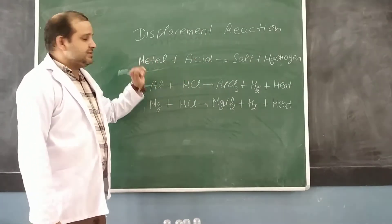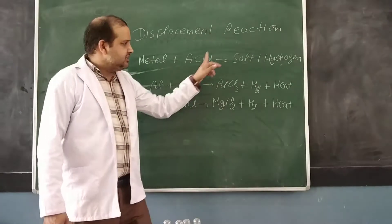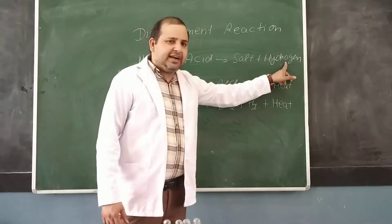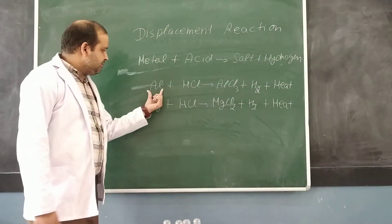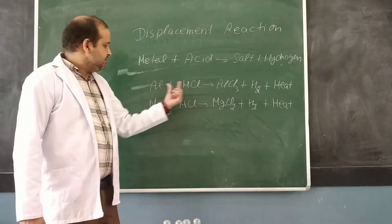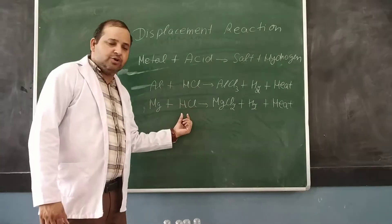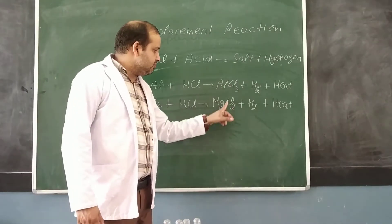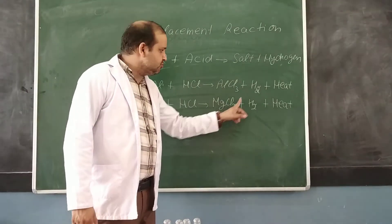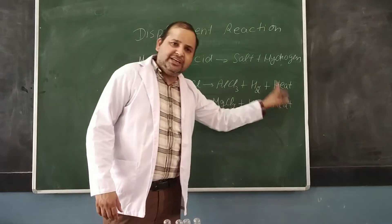When we react any metal with acid, then salt and hydrogen is produced. For example, Aluminium or Magnesium when reacted with hydrochloric acid, they will produce Aluminium chloride, Magnesium chloride, and hydrogen, and heat is produced.